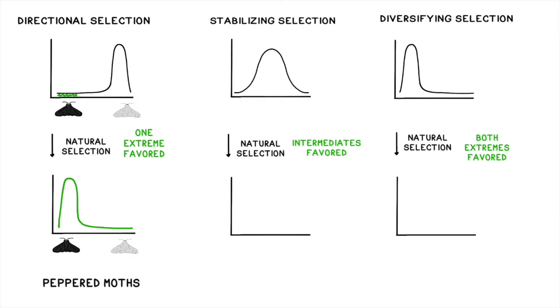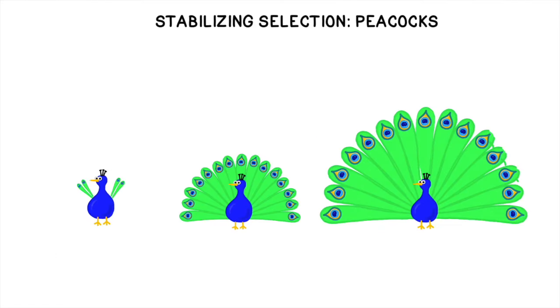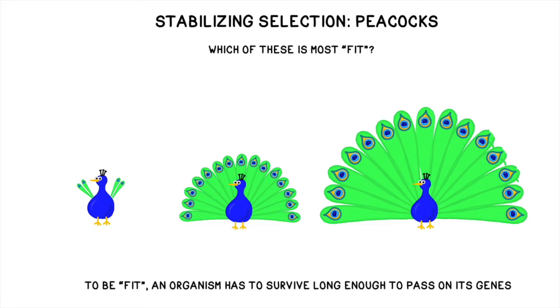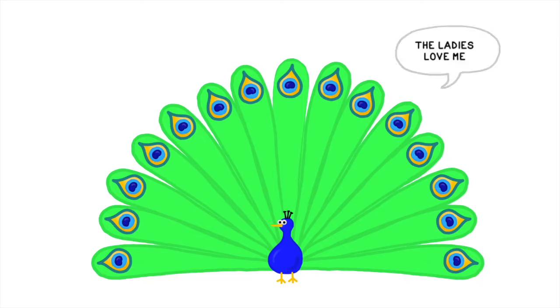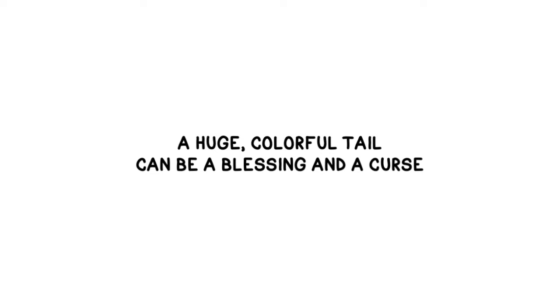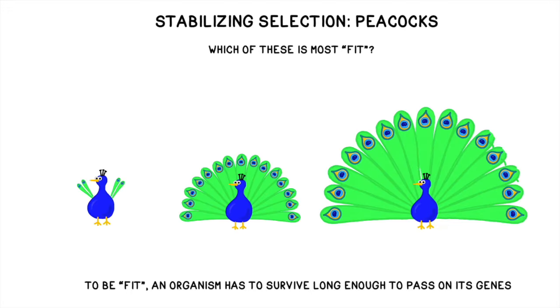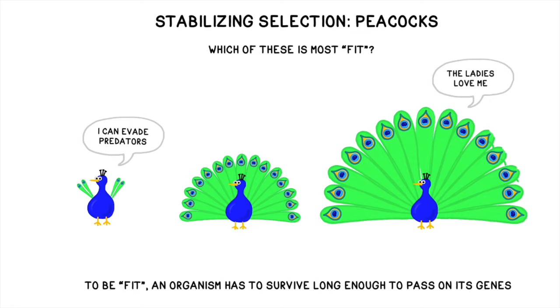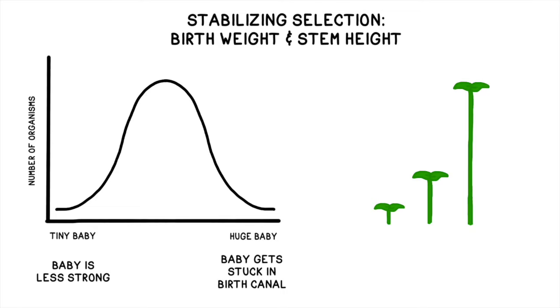In stabilizing selection, an intermediate phenotype is favored, rather than one or both extremes. A great example is a peacock tail. Male peacocks are famous for their enormous colorful tails, which they use to attract female peacocks. Usually, females prefer the males with the largest and most highly colorful tails, because they signal that the male is healthy and probably has good genes. Based on this, we might assume that the goal is to have as large of a tail as possible. However, in addition to attracting mates, enormous tails have a couple of significant drawbacks. Males with exceptionally large tails are much more likely to be eaten before they have a chance to pass on their genes. The best of both worlds is to have a tail that is large enough to attract a mate, but not so large as to prevent you from flying. Male peacocks actually can fold up their tails and fly, but not very far. Other examples of stabilizing selection include birth weight in humans and stem height in plants. In both cases, the intermediate is favored.